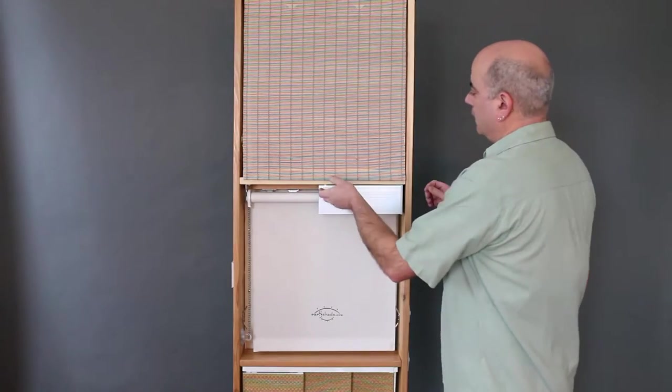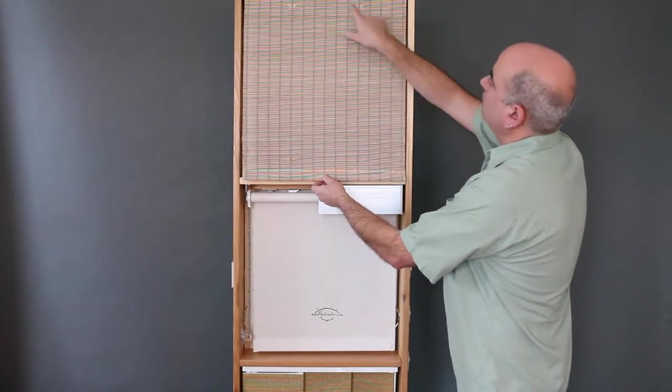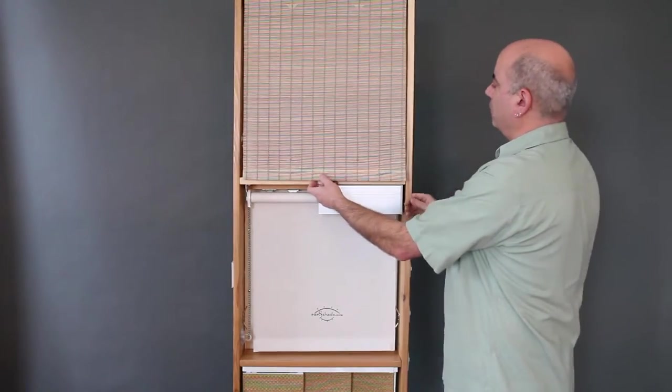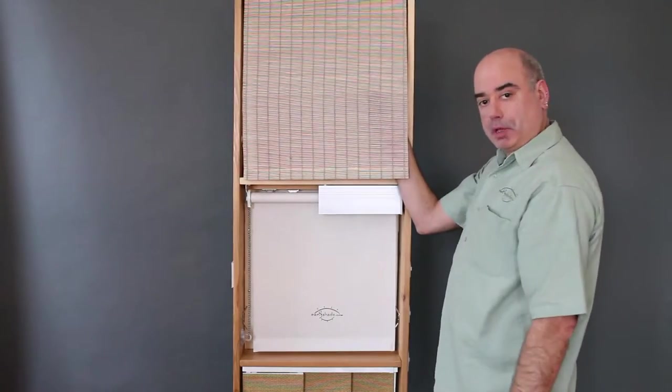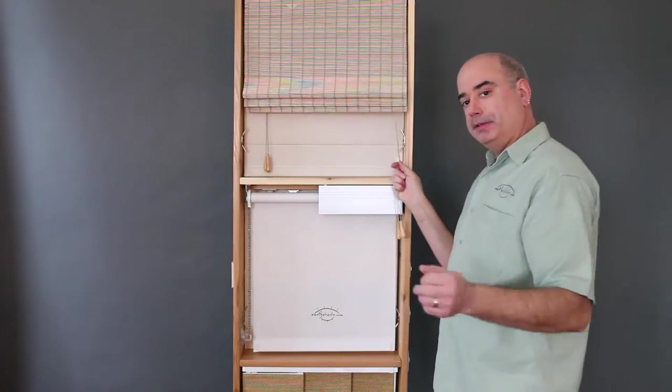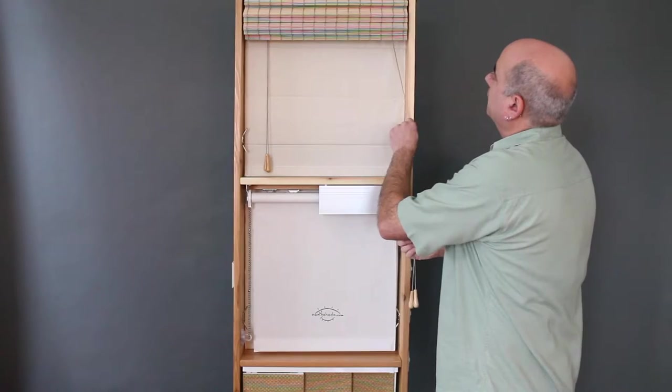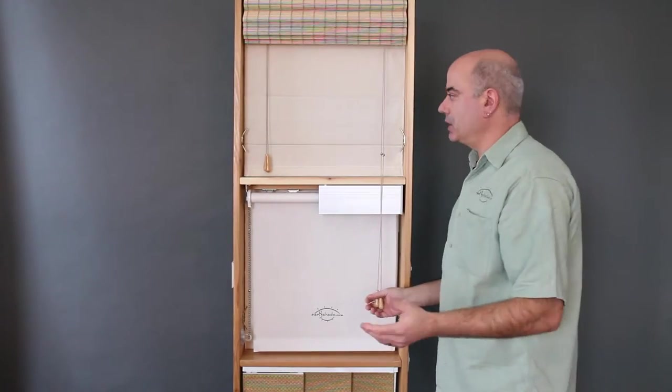Next I'd like to talk about our old-style Roman operating system that's part of our Happy Shade line. This features the shade mounted to the front of the headrail, moving it forward and hiding the operating cords behind the shade. Some people like that, some people don't. The shade lifts from the bottom up just like any of our Roman shades.